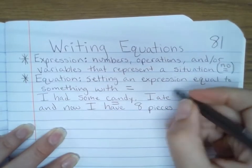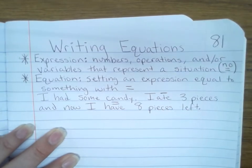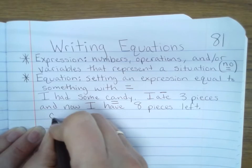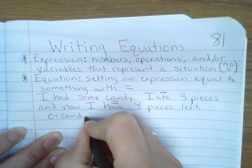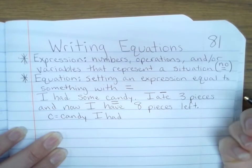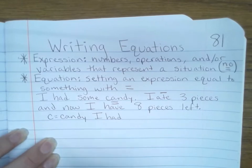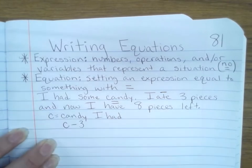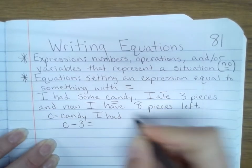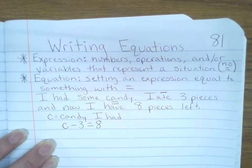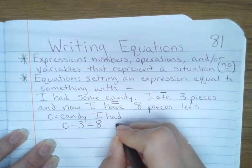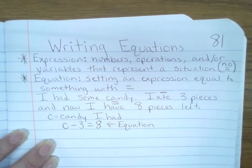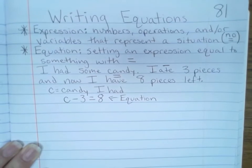So if I ate three pieces of candy, that means three went away from it. Some candy, I don't know what that is, so this is where I get to define my variable. So to define my variable, I'm going to say C equals candy I had at the beginning. Okay, now to create an equation for this, my expression for what happened was I had some candy and I ate three pieces. But now I'm setting that equal because I know the value is eight. This would be the equation that matches this story up here.